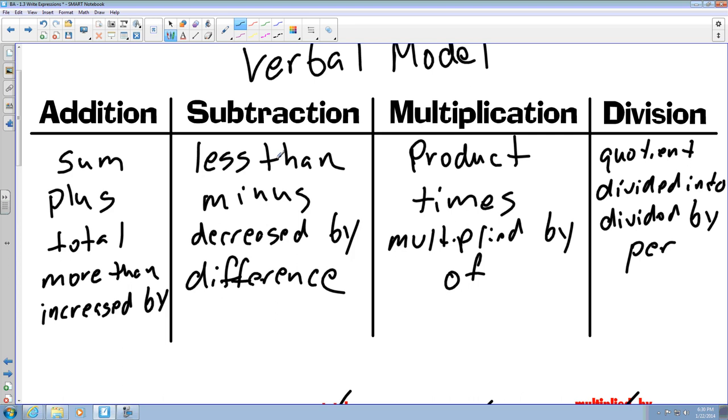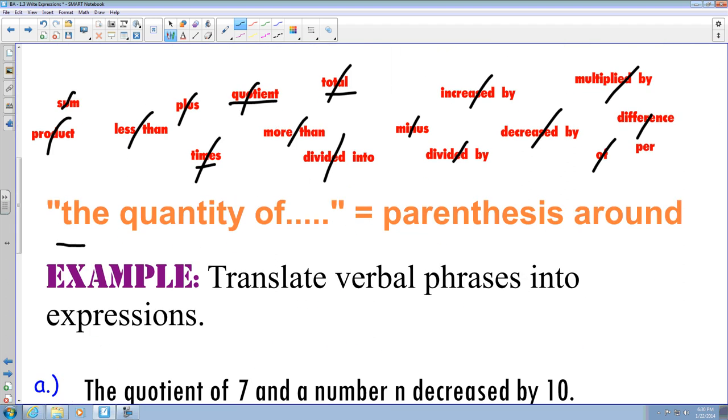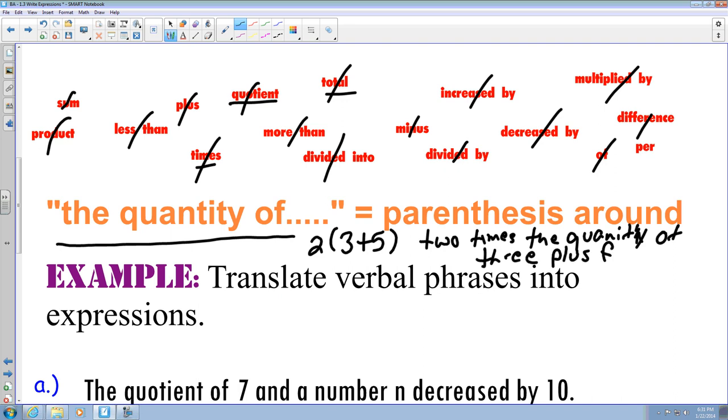So this list is going to help you kind of determine when you're reading different phrases how you're going to write a specific expression. Another term that you're going to see is the quantity of. So anytime you hear the words the quantity of, you're going to put parentheses around it. So if you look something like this, like say I have 2 times the quantity of 3 plus 5, so if I were to write that on words it would be 2 times the quantity of 3 plus 5.